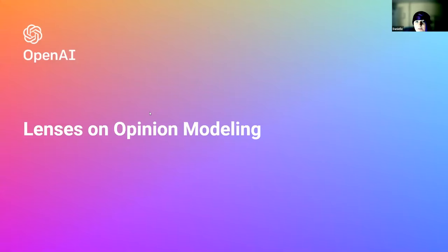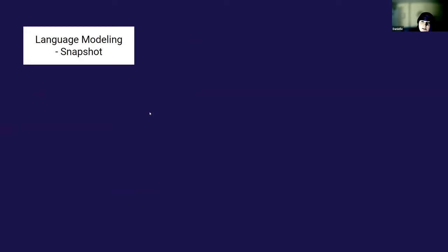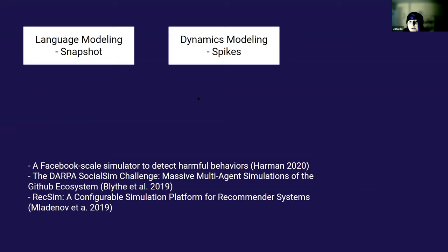First, a brief literature review. We have language modeling where you take lots of data and feed it into a language model. It captures a snapshot in time. This is useful but doesn't capture dynamic questions like how the process is changing over time. Some previous work has studied Facebook-scale simulators or GitHub, finding these spikes, but it's hard to get detailed analysis.